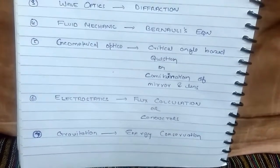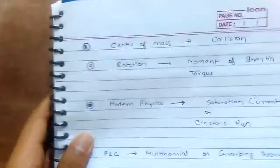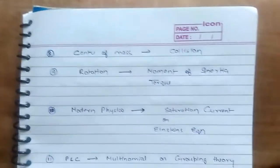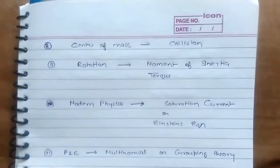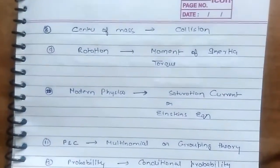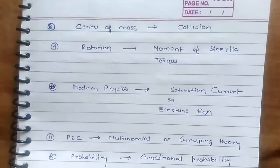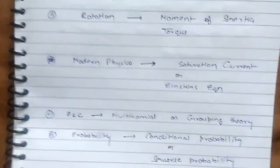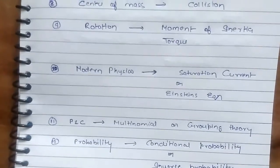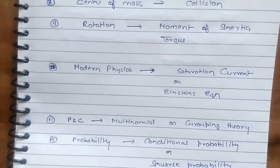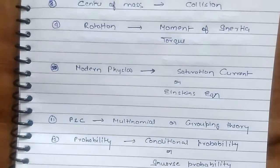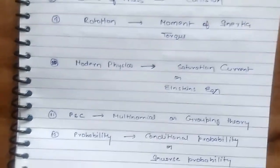Energy conservation. Center of mass, collision, rotation: moment of inertia or torque calculation. Modern physics: saturation current or Einstein equation.